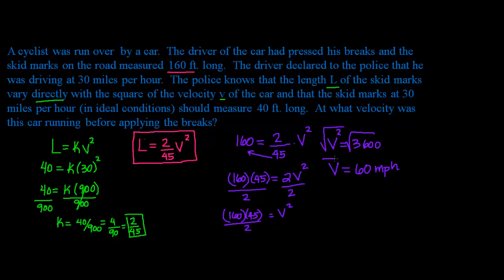So this driver, who allegedly was driving at 30 miles an hour, was really driving at approximately 60 miles per hour. So he will definitely be in trouble for this accident. I hope you understood. I'll see you in the next example.